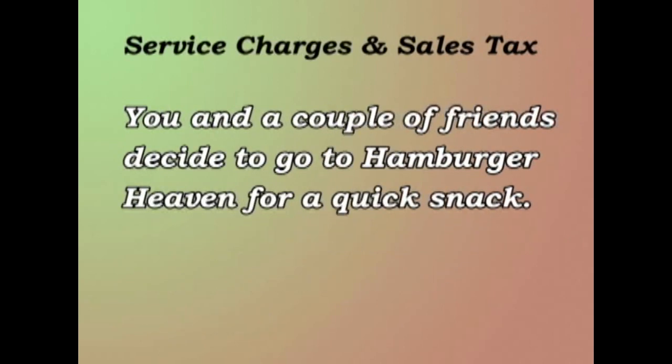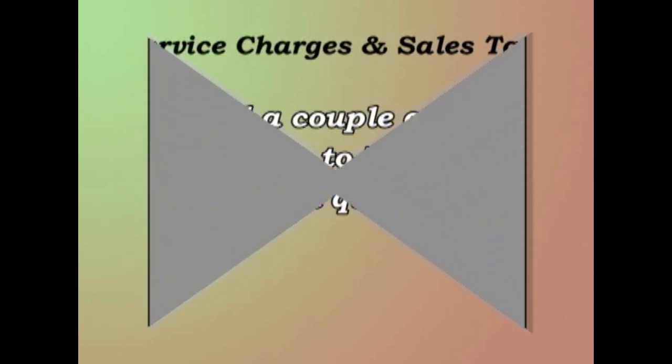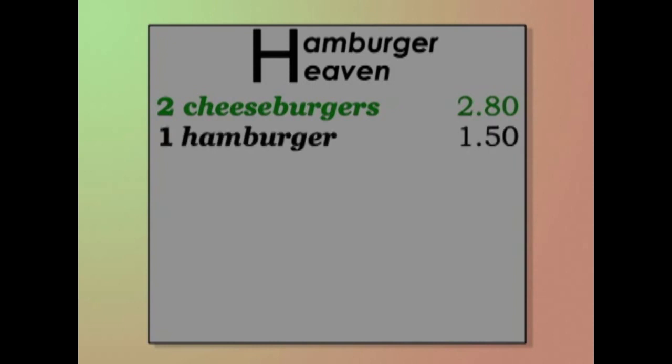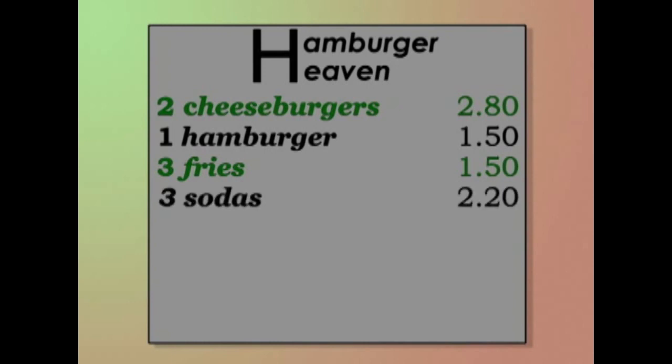Let's say you and a couple of friends decide to go to Hamburger Heaven for a quick snack. You have two cheeseburgers at $2.80, one hamburger at $1.50, three fries at $1.50, three sodas at $2.20, and the subtotal is $8.00.